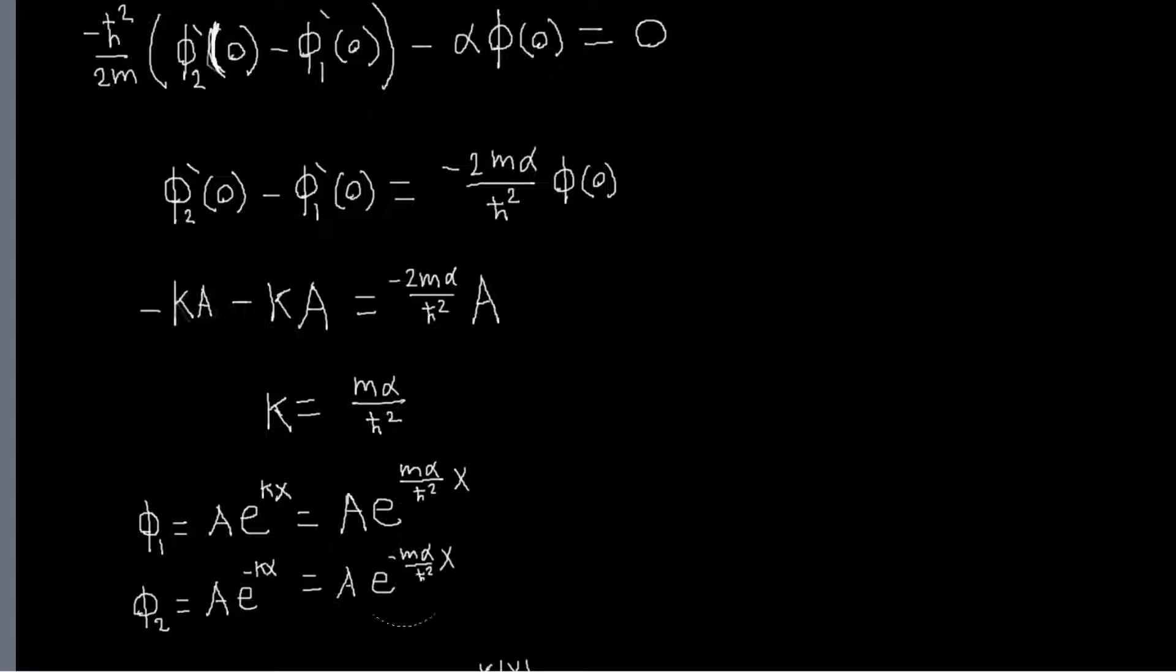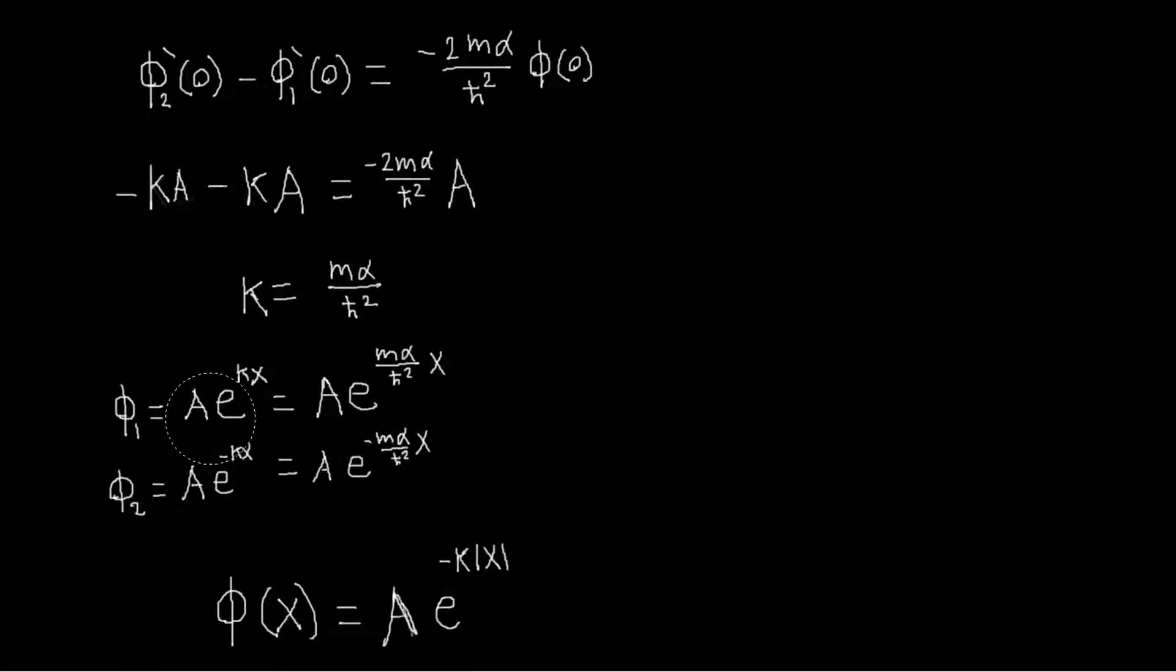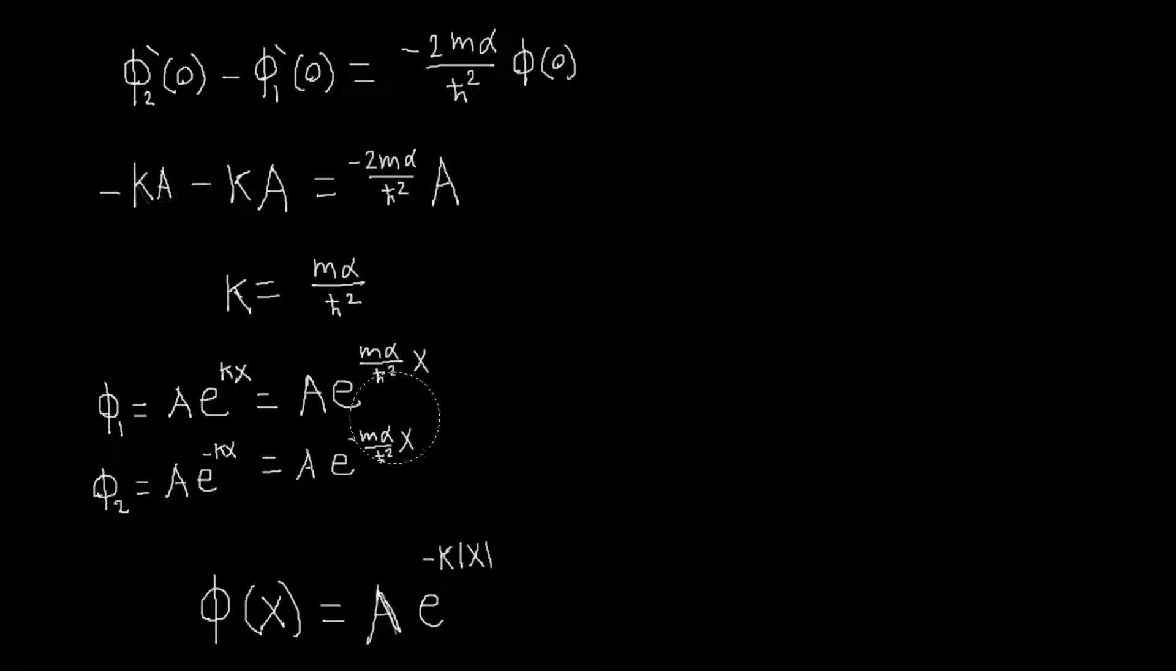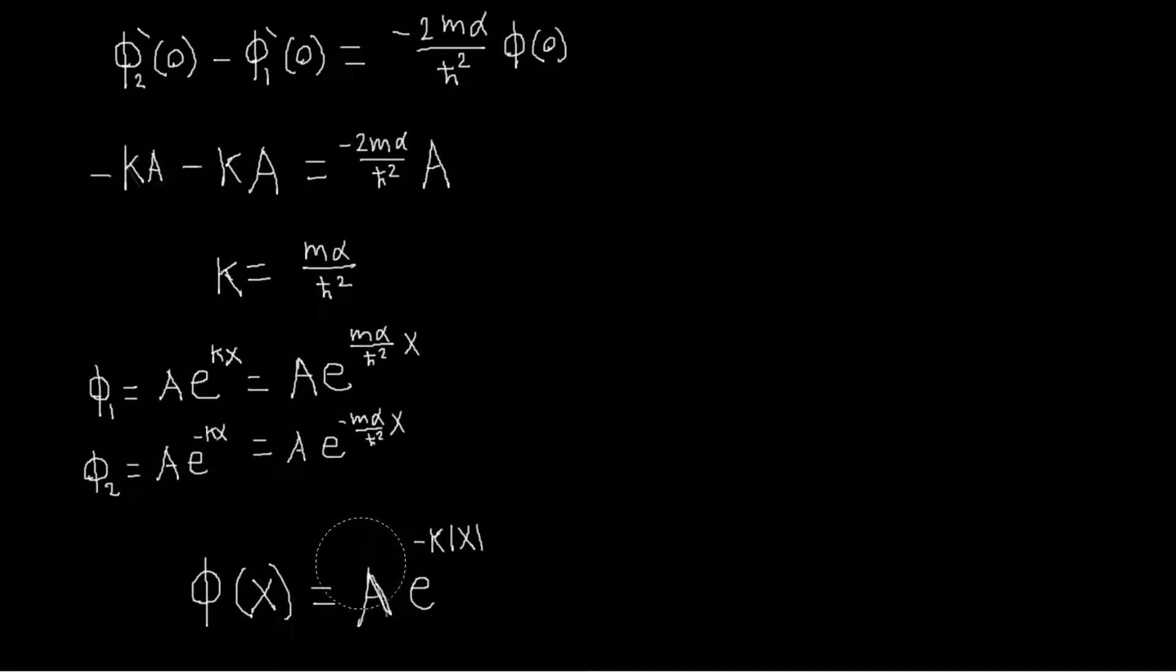We can write down phi 1 and phi 2, and then we can even simplify this a little bit, and write, instead of doing things in a piecewise way, you can just write that phi of x should be A times e to the minus k absolute value of x. And again, you would have to normalize this, but our problem is, for all intents and purposes, done.